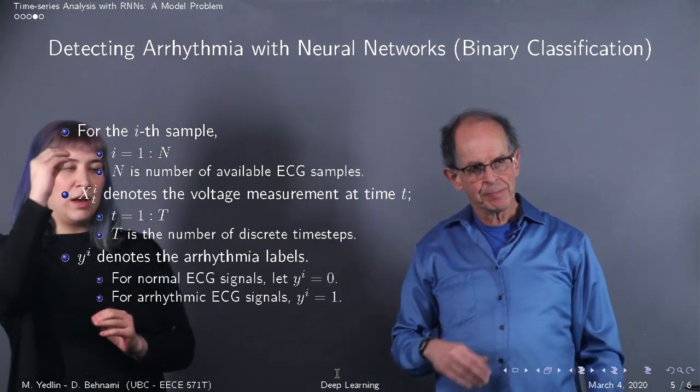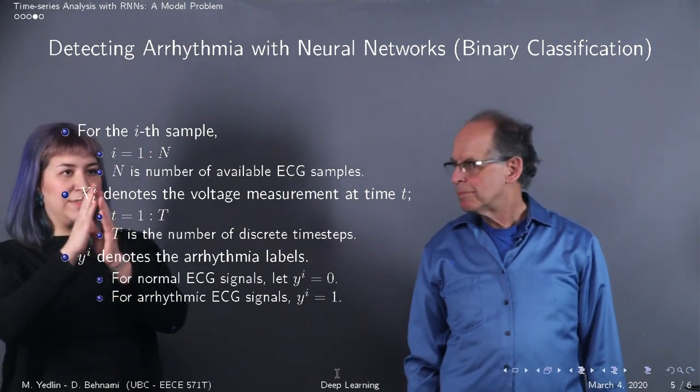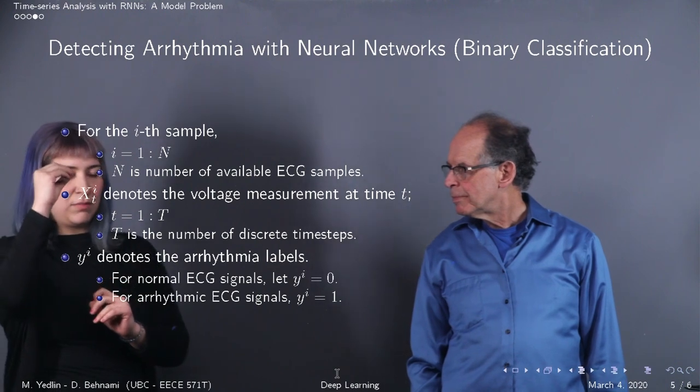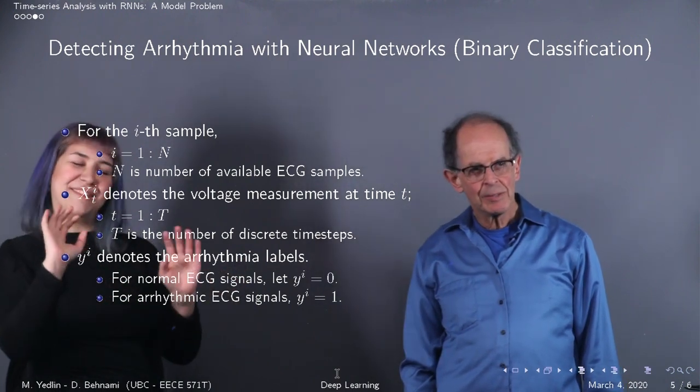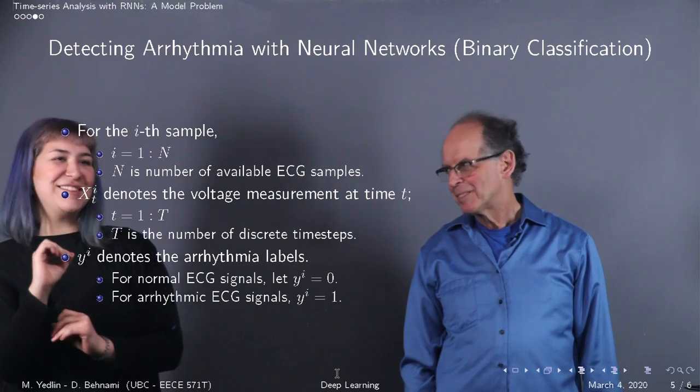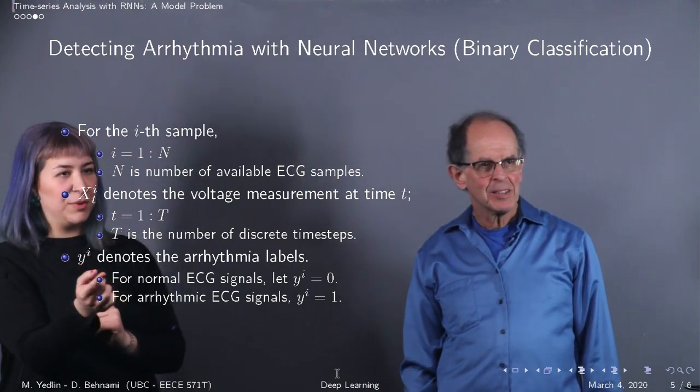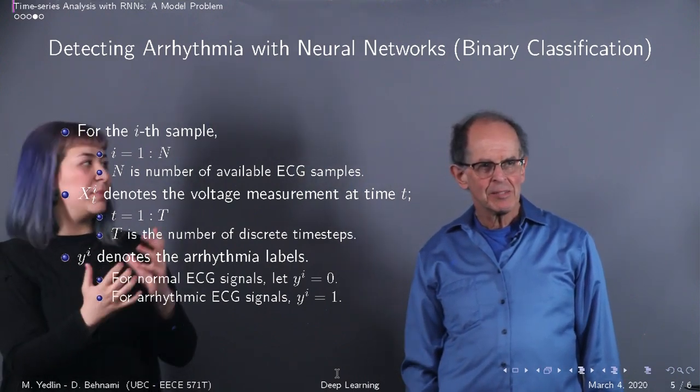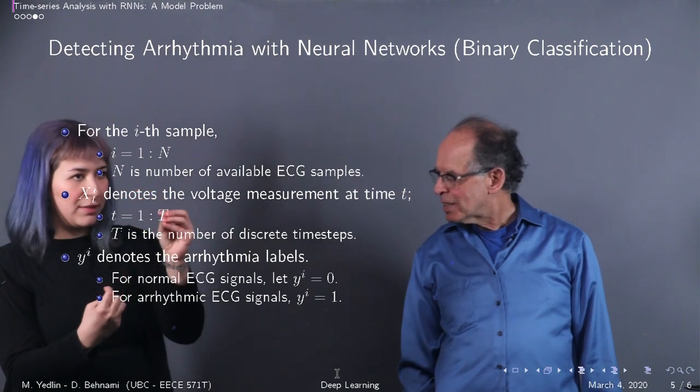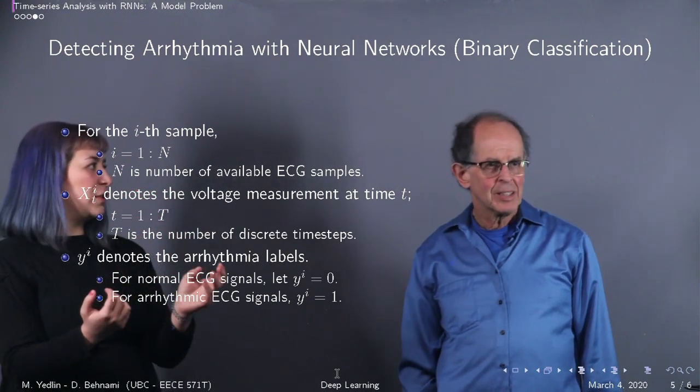The inputs are going to be voltages at t time steps, voltages measured on ECG at t time steps. And the output, which we'll denote with y^i, is going to be your one for arrhythmia and zero for non-arrhythmic cases.